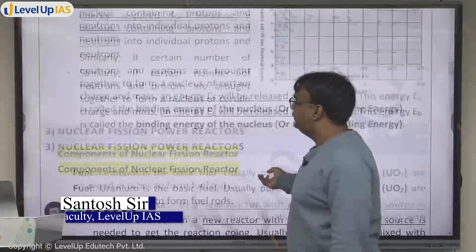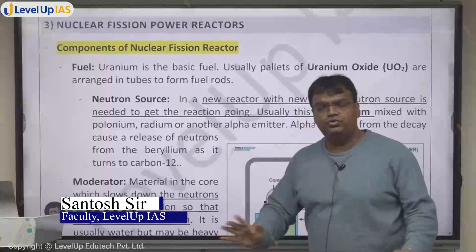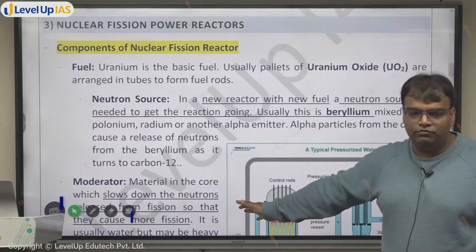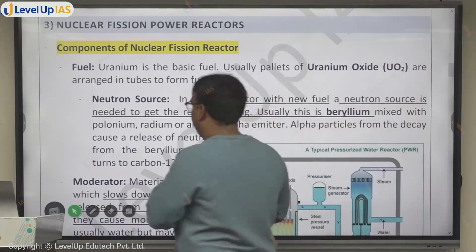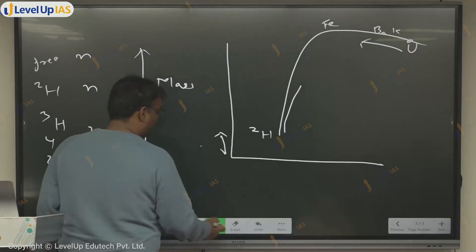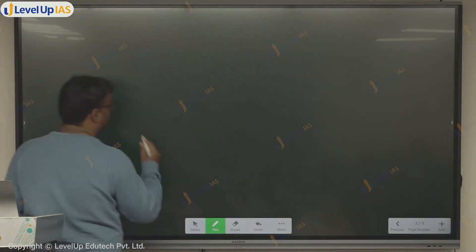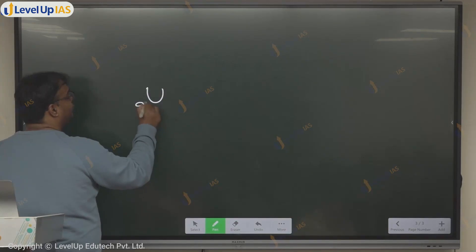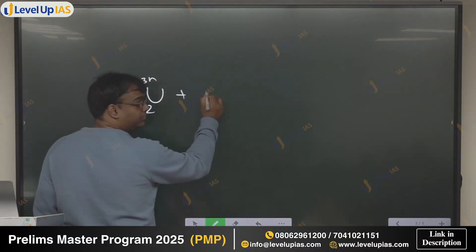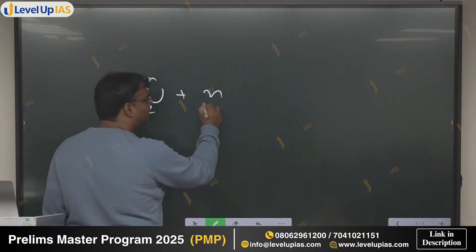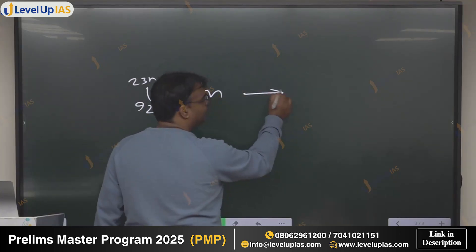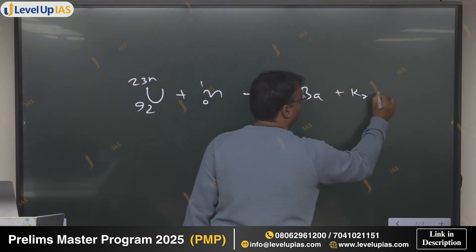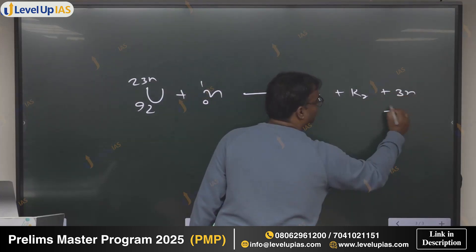Let's now come to fission reaction — nuclear fission. In nuclear fission, we have a nuclear power plant. The nuclear reaction we are talking about: Uranium-235, when you bombard it with a neutron, it will become barium plus krypton plus three neutrons plus energy.